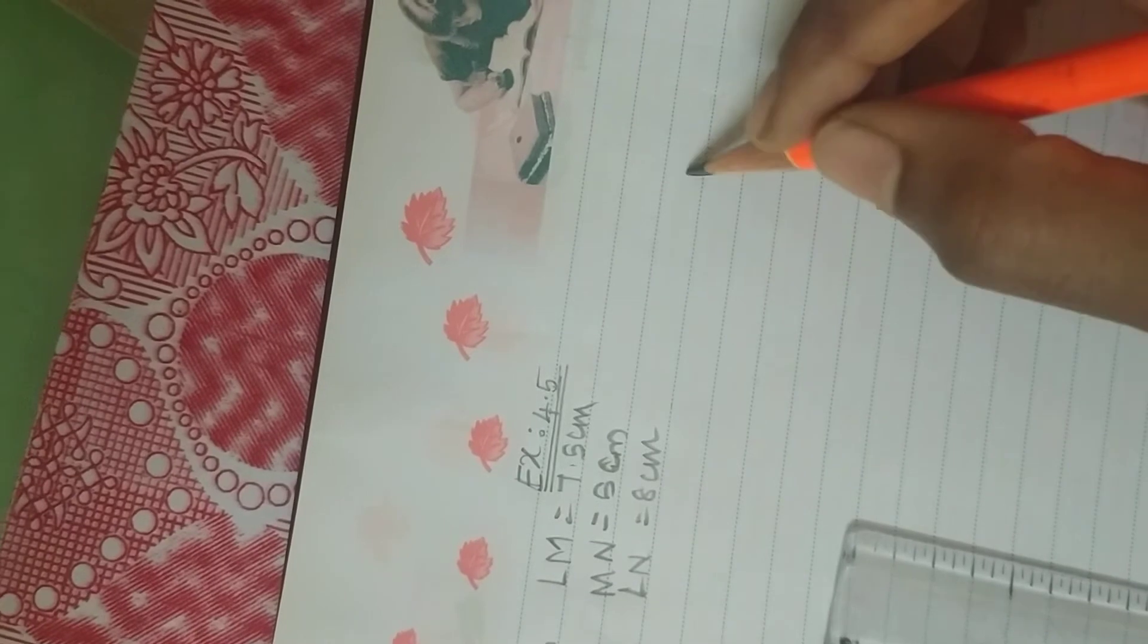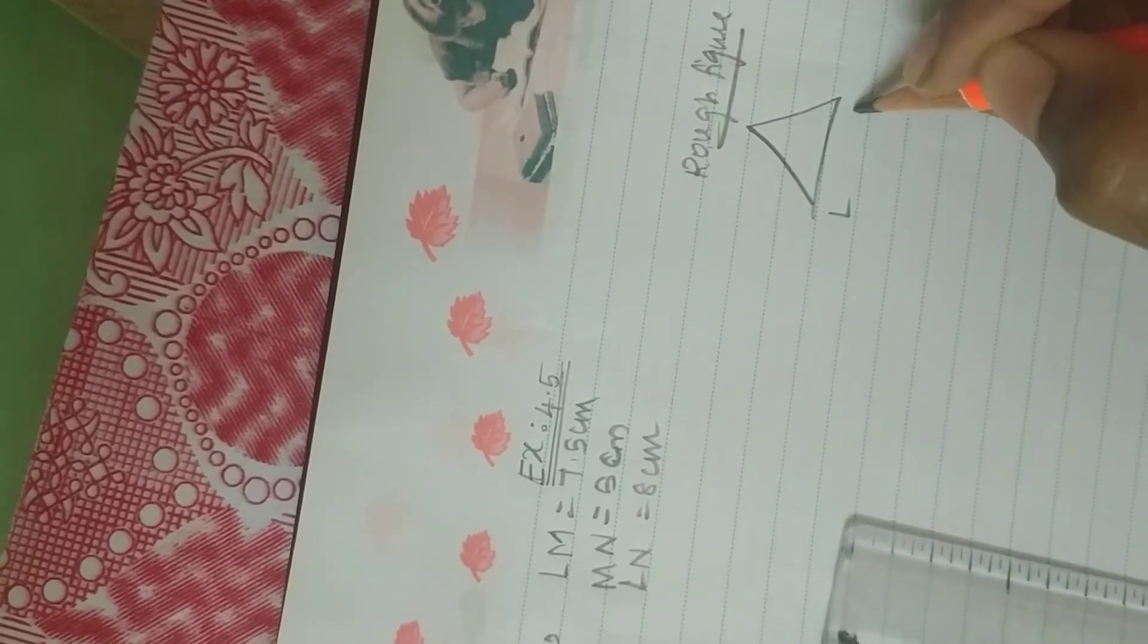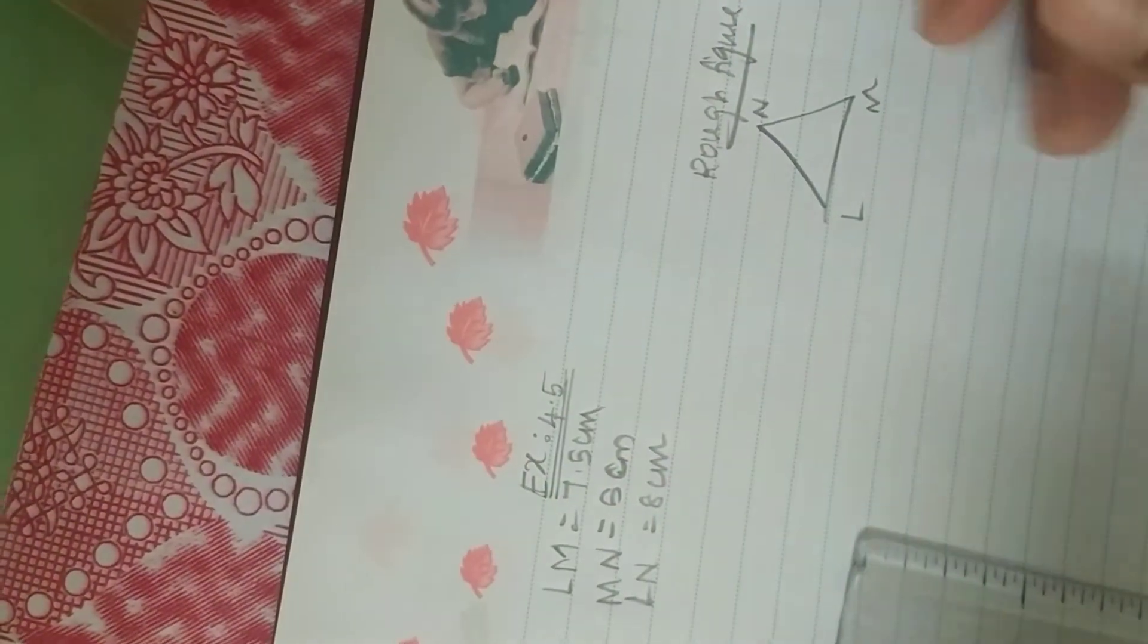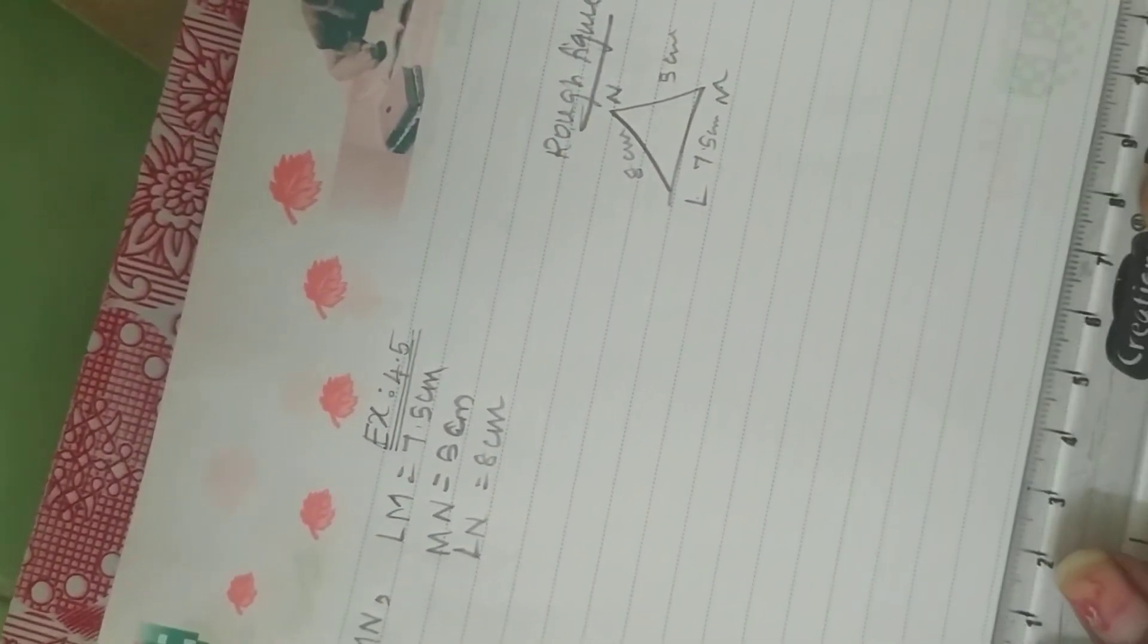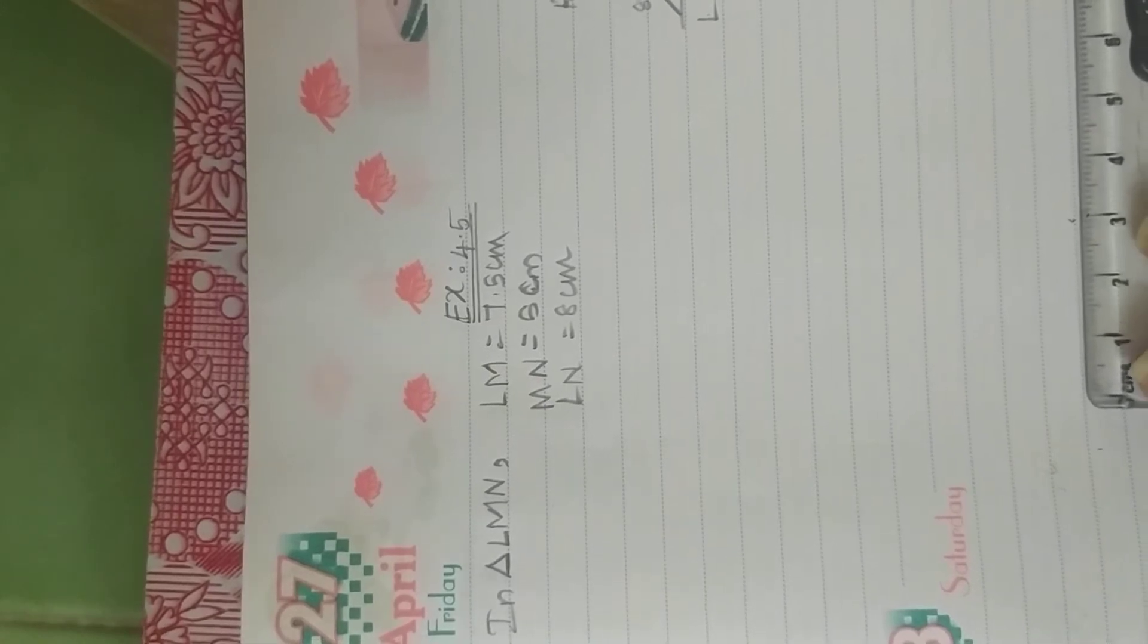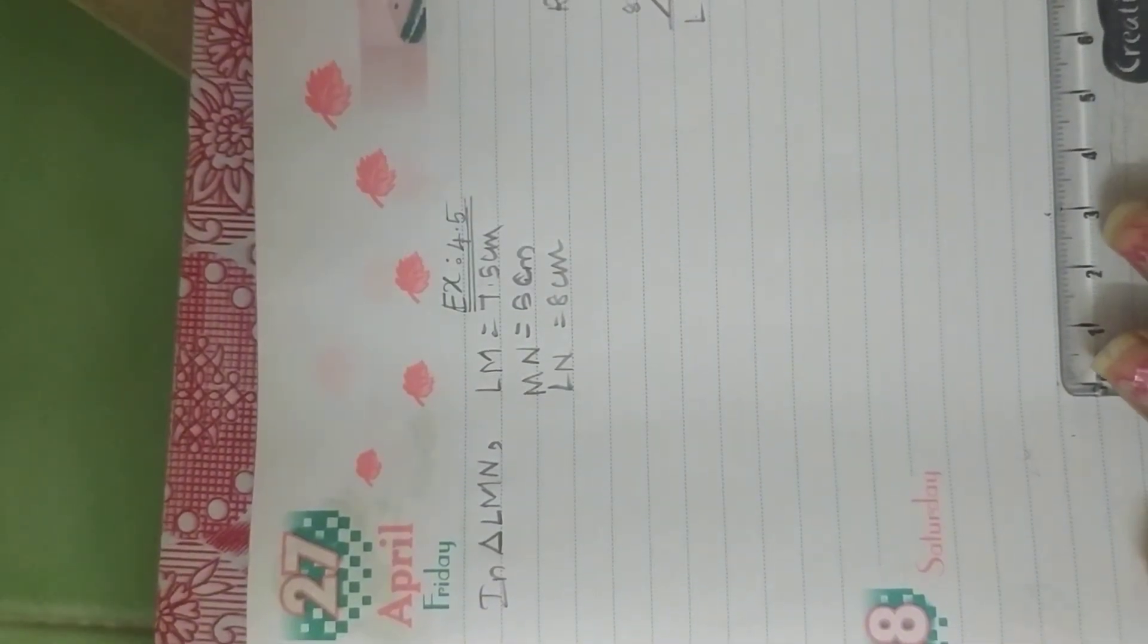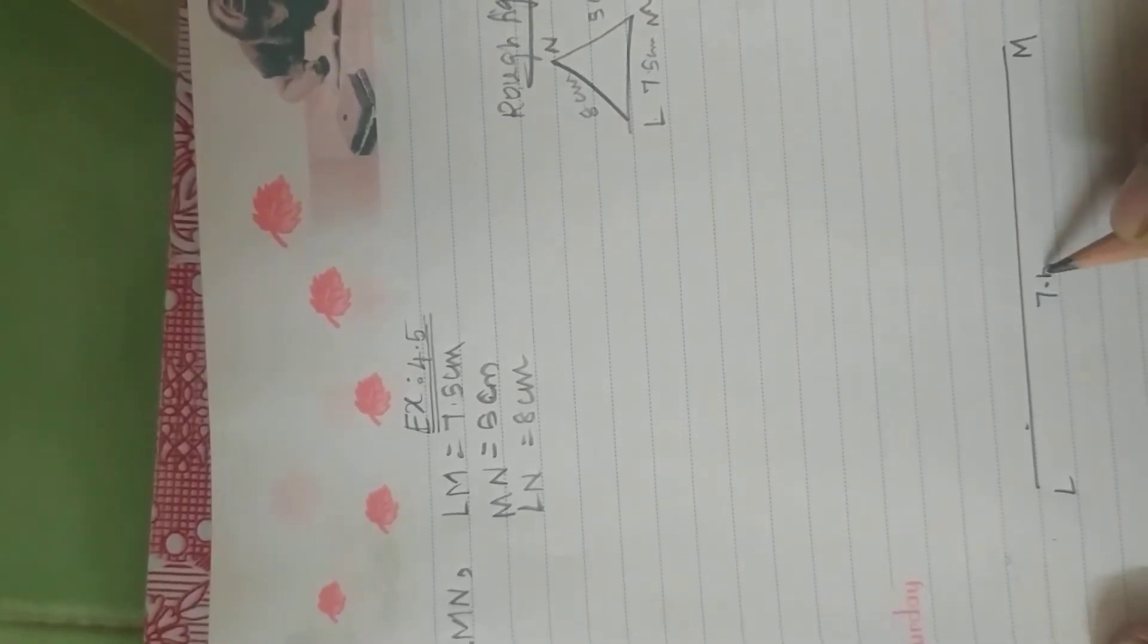So I am drawing. You should draw in practical geometry notebook. For understanding, I am writing because I am taking a video, but you should use a scale and pencil. 7.5 cm, MN is equal to 5 cm, LN is equal to 8 cm. So this side is 7.5 cm. This is L and this is M, which distance is 7.5 cm.